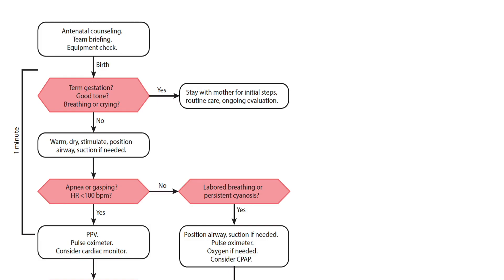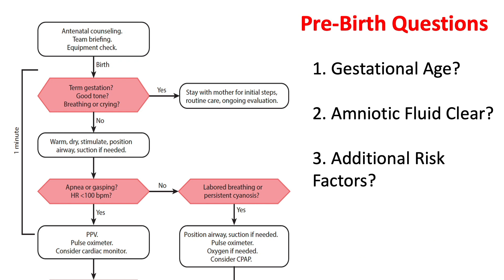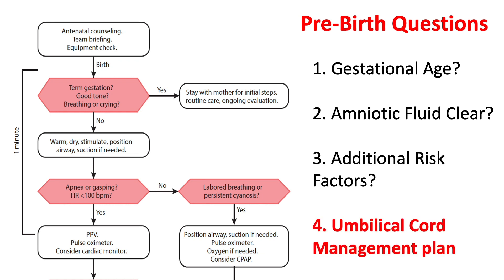Let's look at the top part of the NRP algorithm. As always, we will start off with the four pre-birth questions. These four pre-birth questions will guide us with our equipment and manpower preparation. First question: what is my baby's gestational age? Is the amniotic fluid clear? Are there any additional risk factors? And what is our umbilical cord management plan? Umbilical cord management plan has been added to the four pre-birth questions, replacing 'how many babies.'